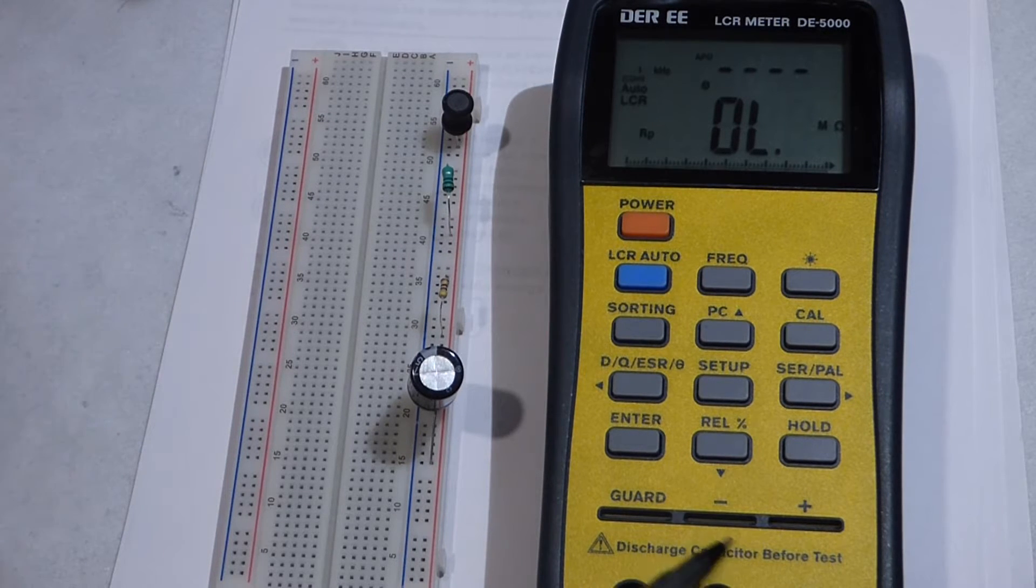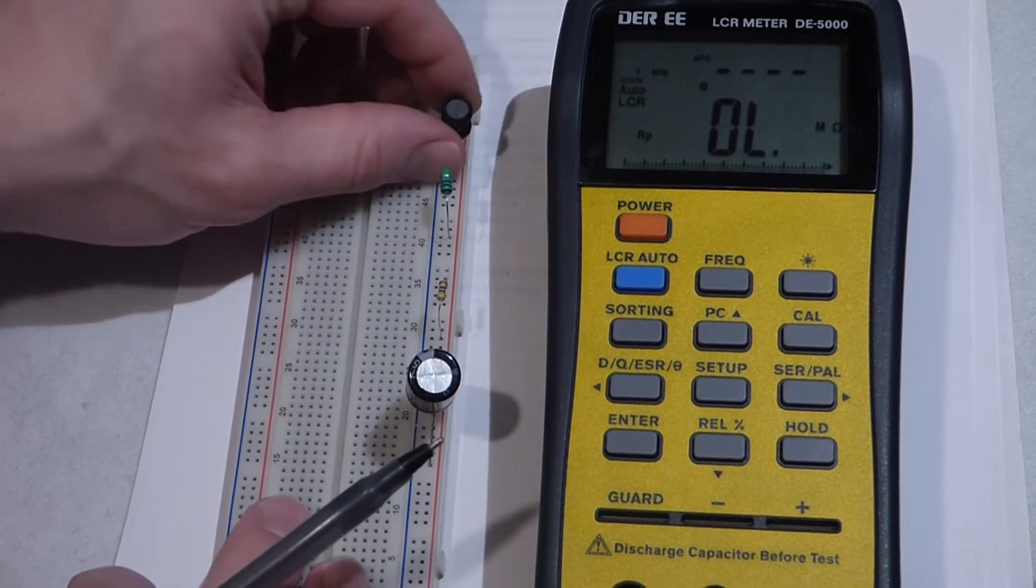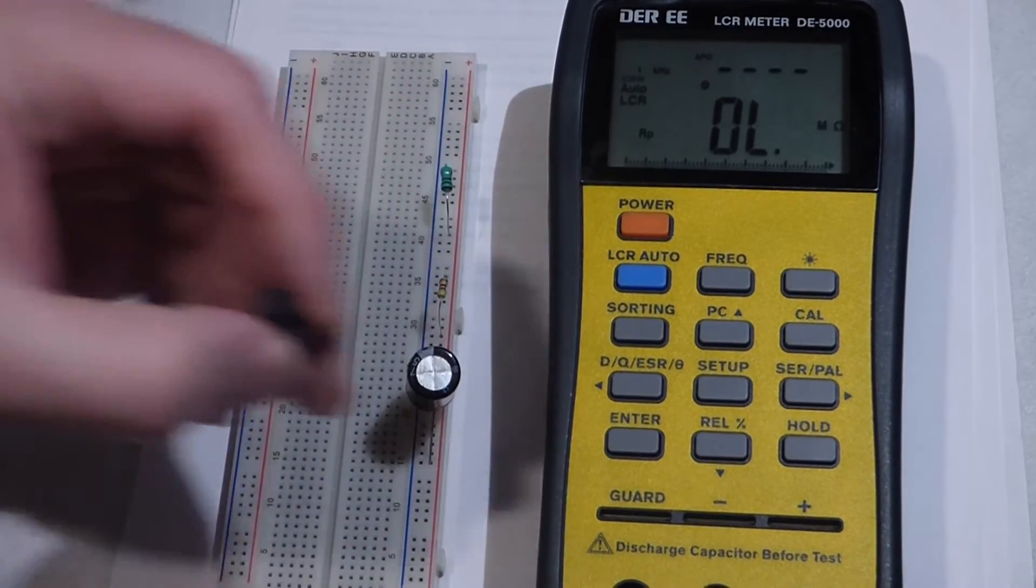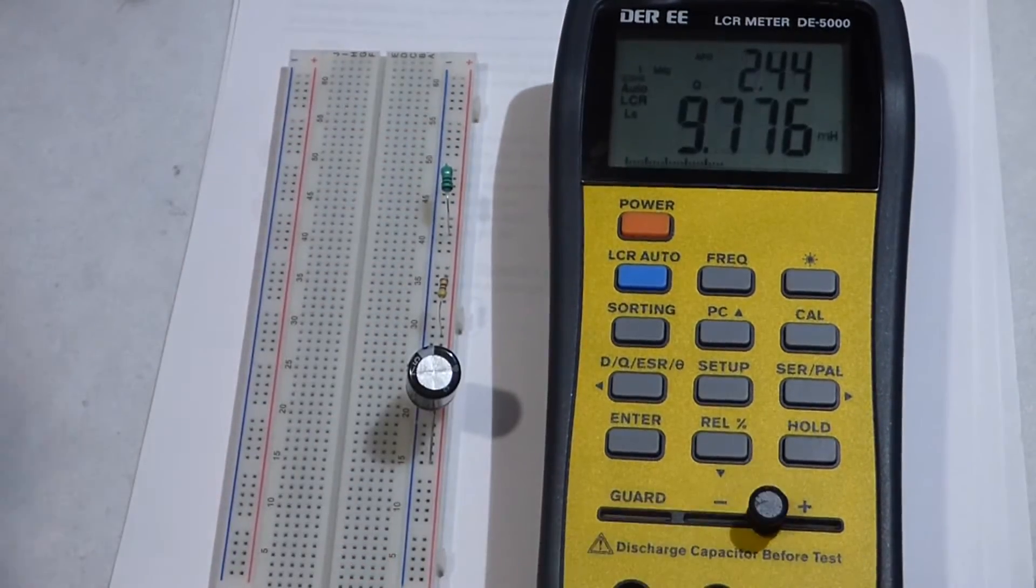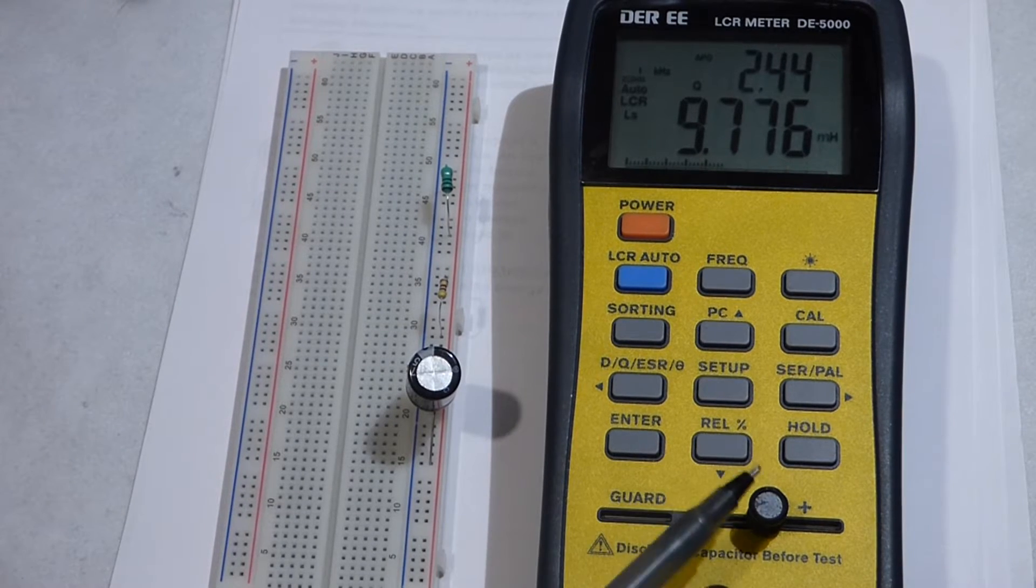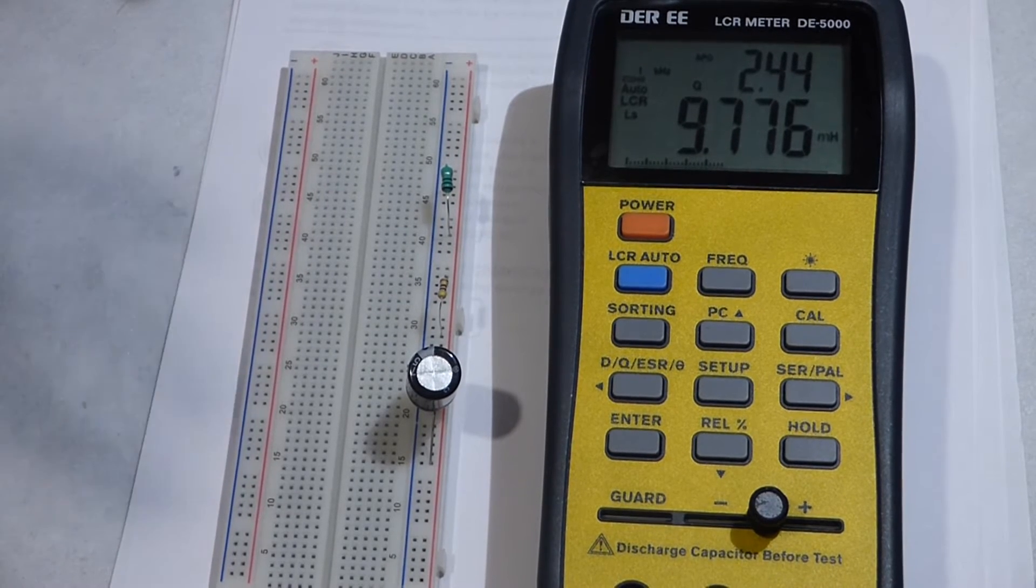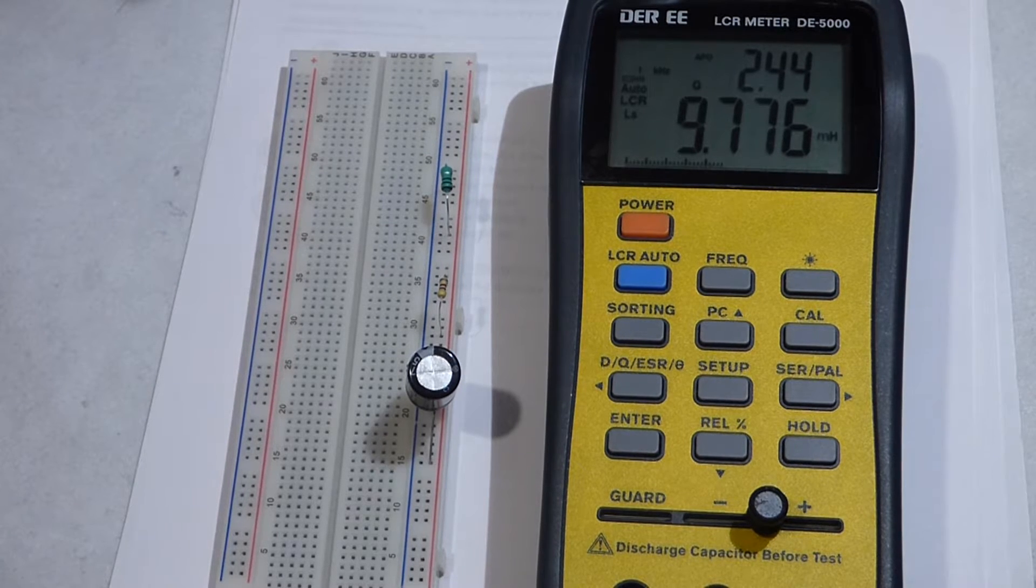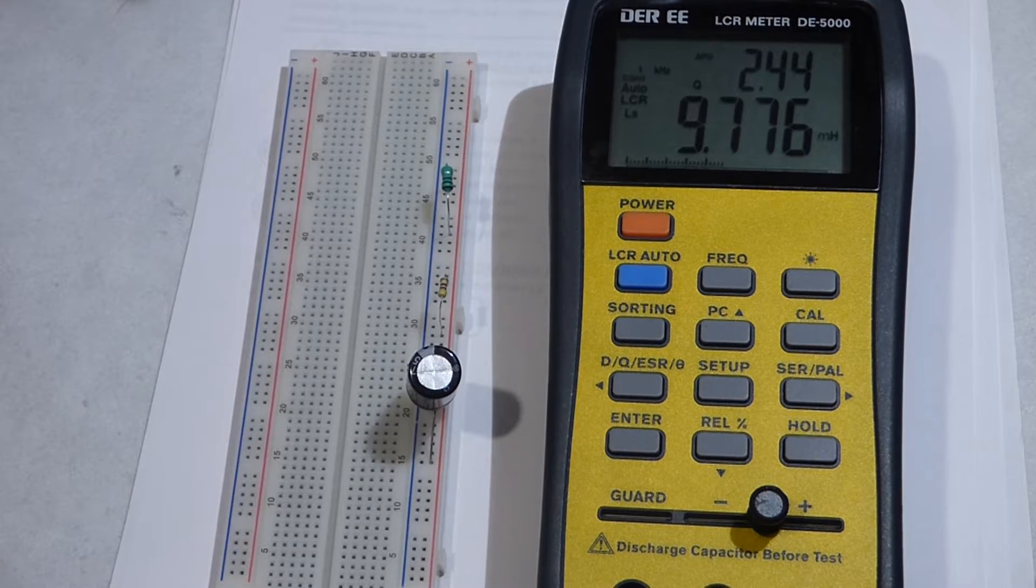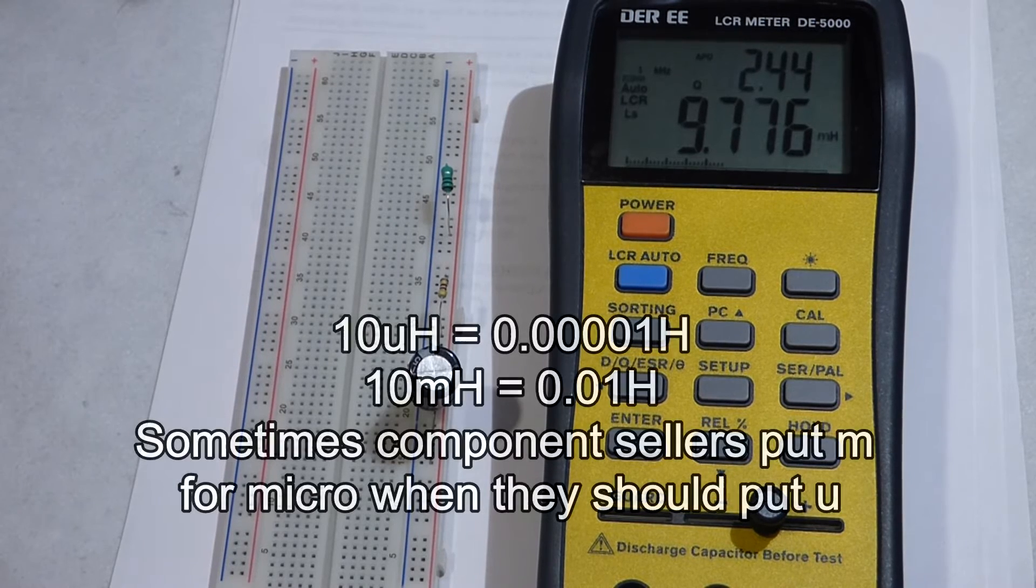Right now we're just going to stick with this. I ordered this inductor online, and one issue with inductors is that micro is usually signified by the Greek letter mu, which looks like a u.